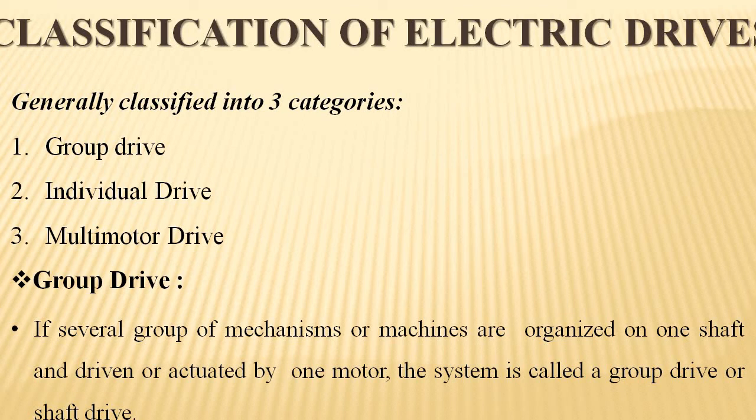Classification of electrical drives: There are three categories — group drive, individual drive, and multi-motor drive. In group drive, several mechanisms or machines are organized on one shaft and driven by one motor; this system is called a group drive or shaft drive.